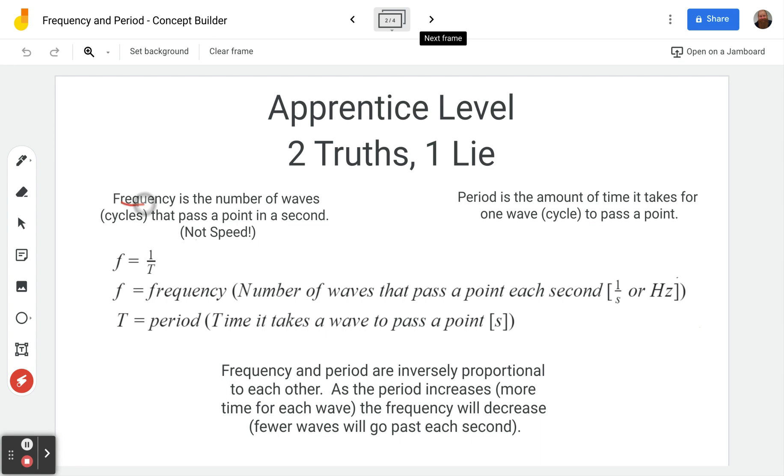So what is frequency? Frequency is the number of waves or cycles that pass a point each second, or if it's something vibrating is how many times does it vibrate through a full rotation of vibration each second. It's important to note this is not speed and this is going to be true of a lot of these. The lie will be the thing that makes frequency sound like a speed. It's not how many meters it can go each second, it's how many cycles it can complete each second.